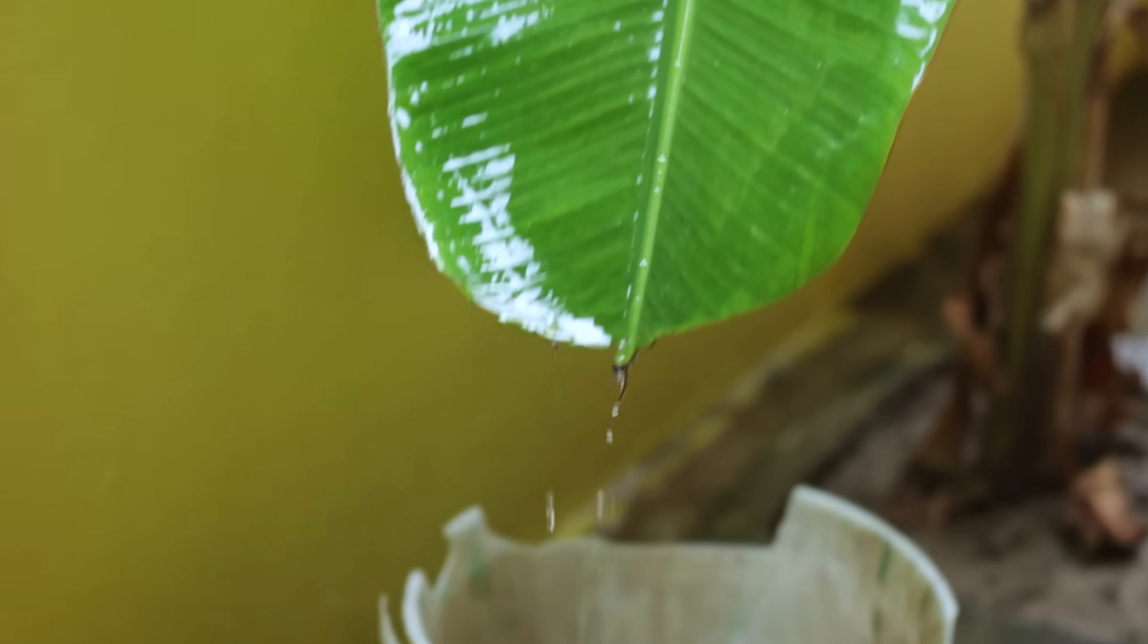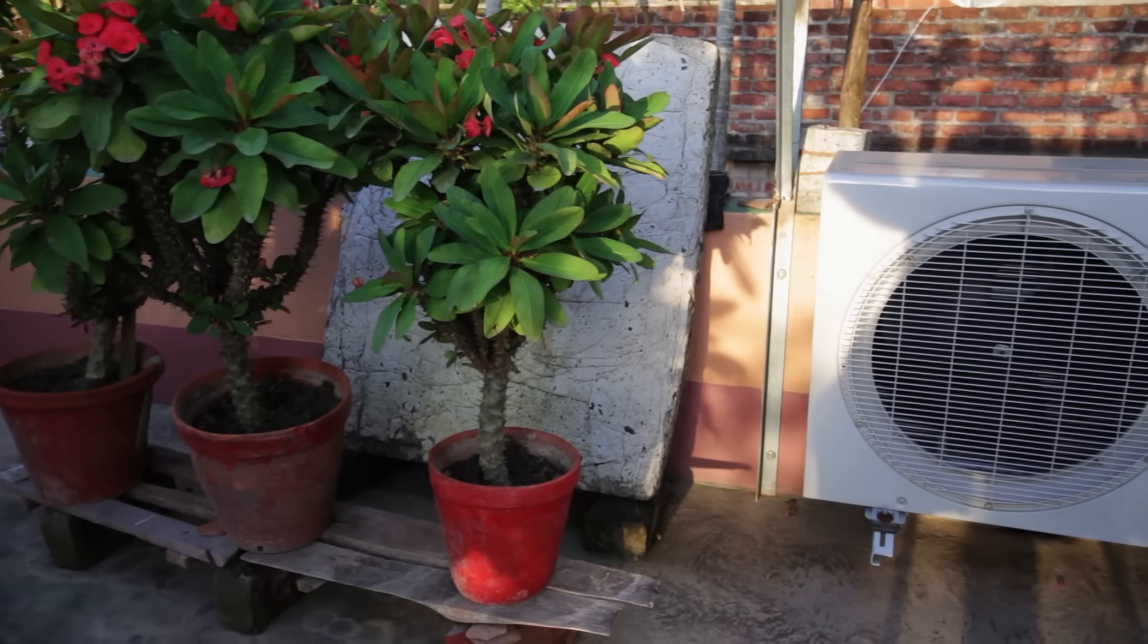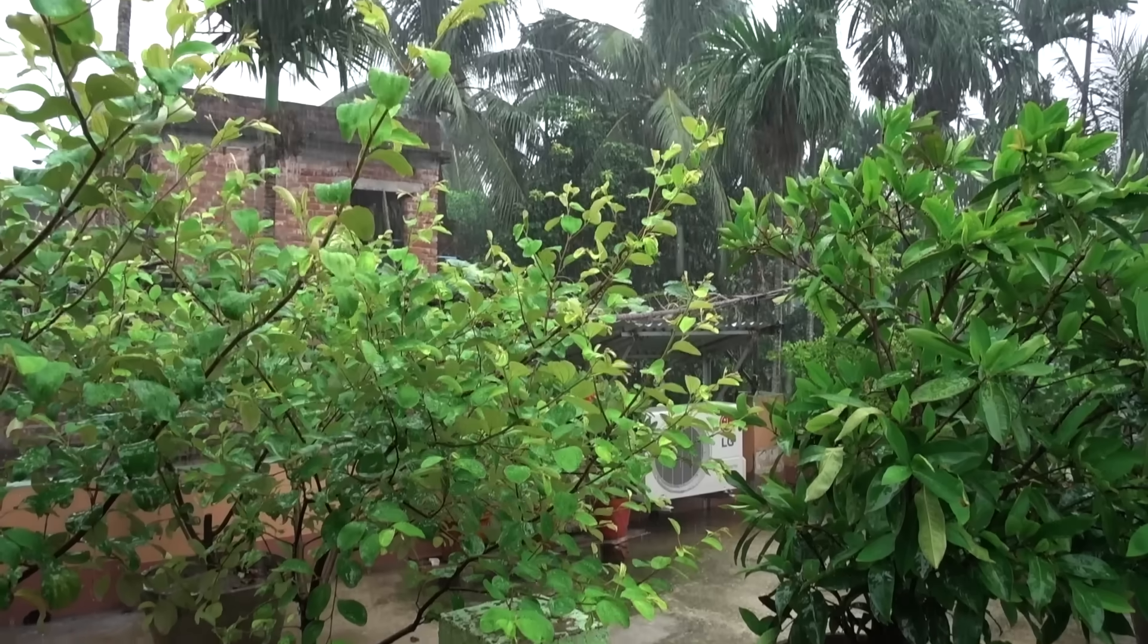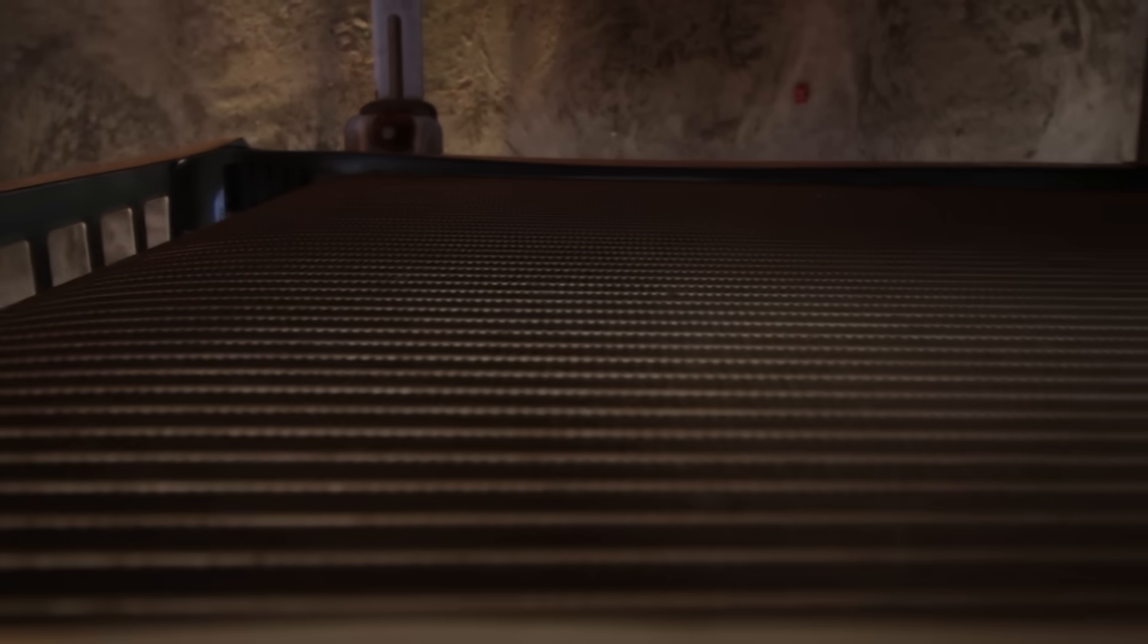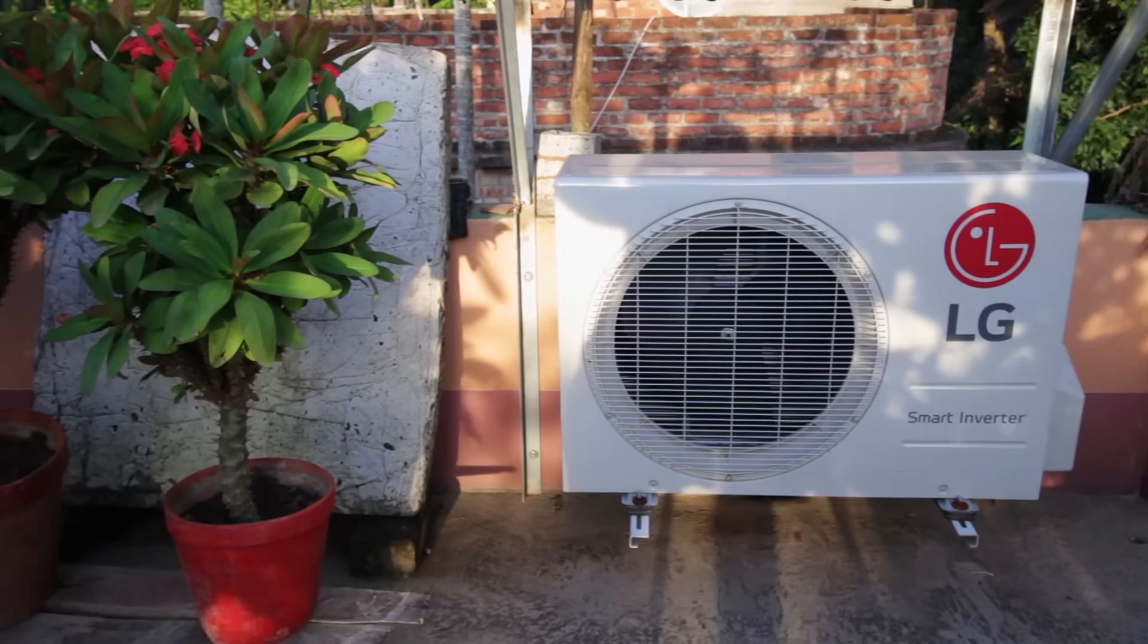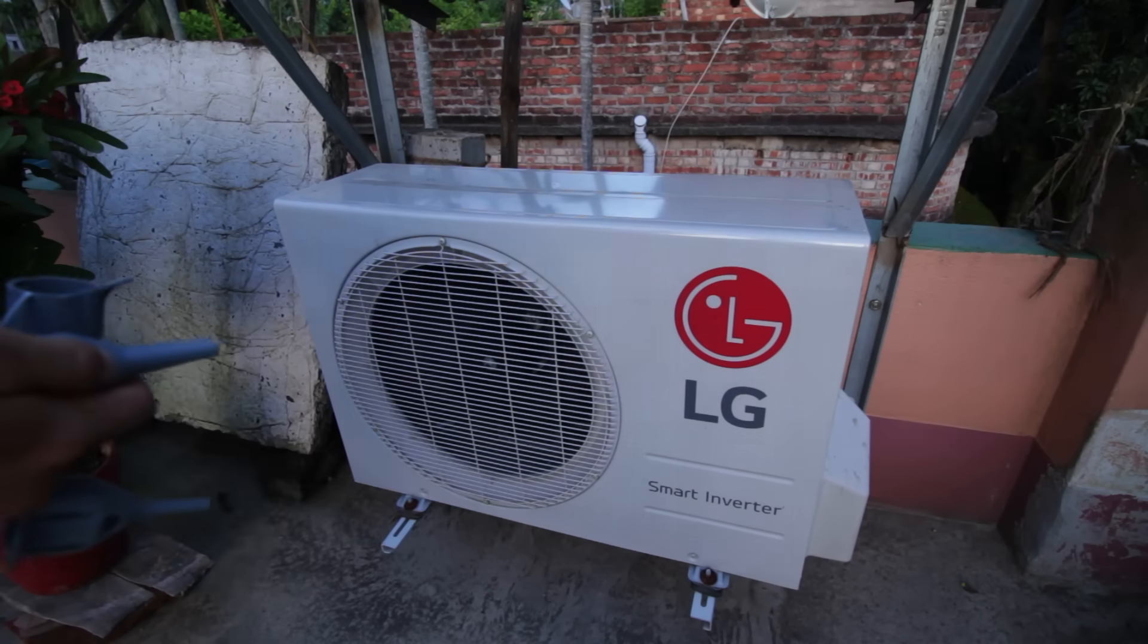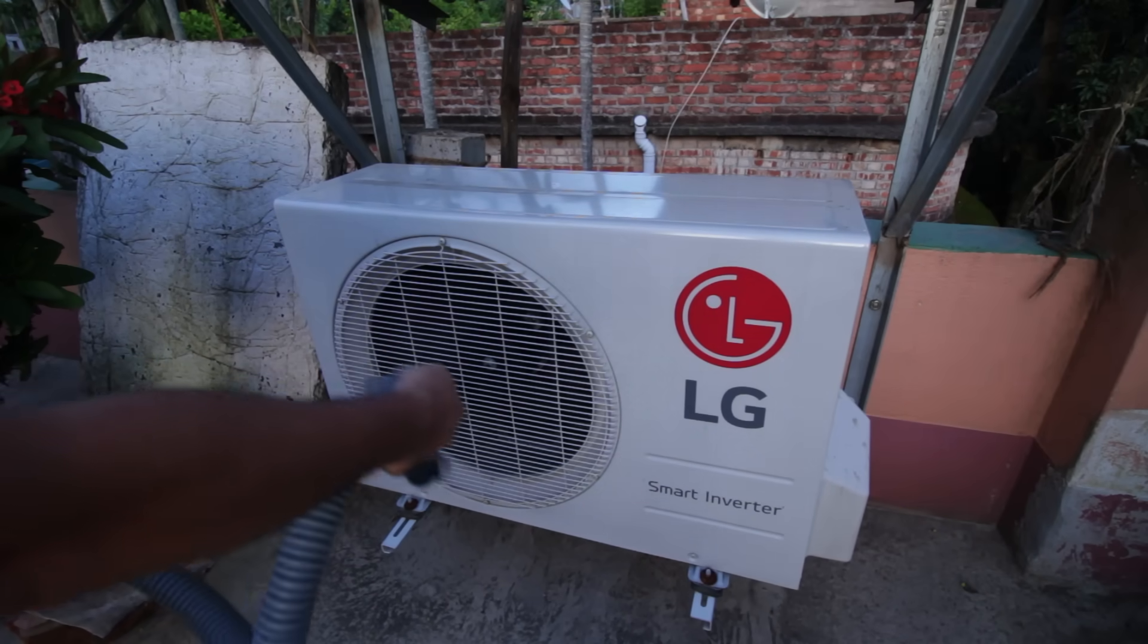The outdoor unit is on the rooftop and yesterday there was a heavy rain and it cleaned the unit. There is no dust over the fins, it's absolutely clean. So I don't need to clean the outdoor unit, but if your outdoor unit is dirty you can clean it just using a blower.